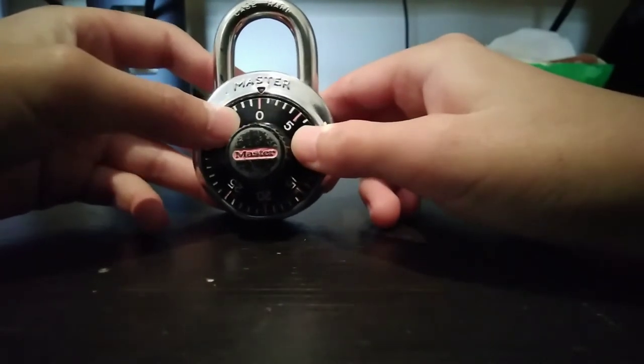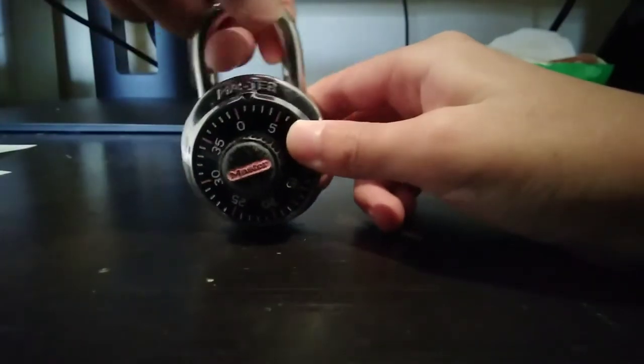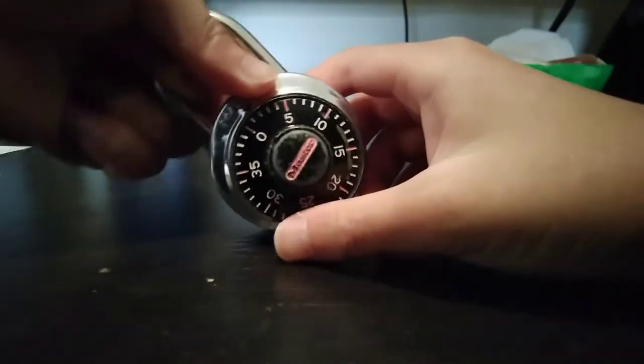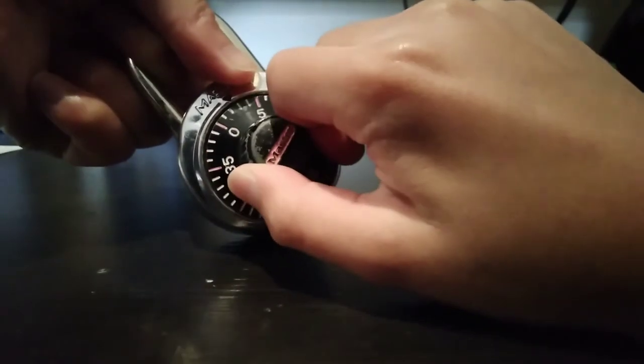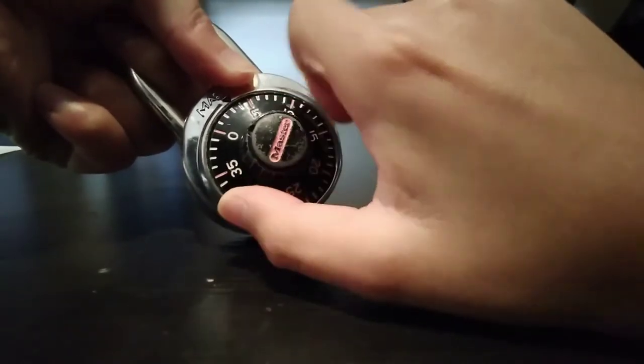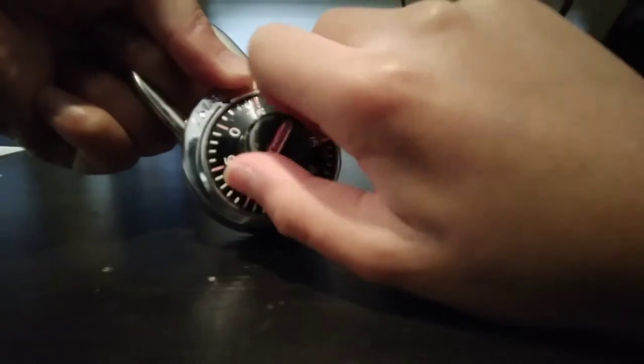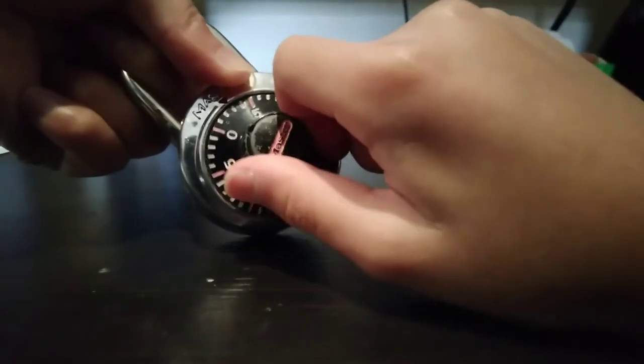What you want to do is go to zero, move it a little bit over, and apply full tension onto the shackle. Then you move it back and forth between two parts, and the middle number is the number you want.